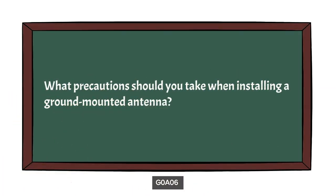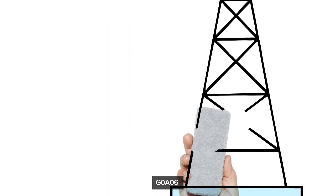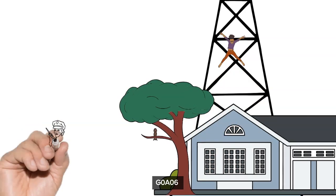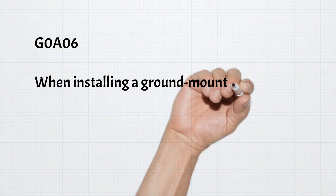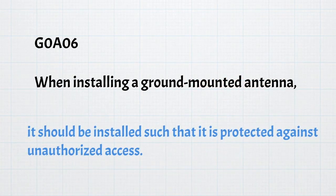Another safety question we should ask is: what precautions should we take when installing a ground-mounted antenna? Just like one would put a fence around a pool to keep neighborhood kids from sneaking in and drowning, we need to do something to protect our antennas so that kids don't climb on them. For the exam, we need to know that when installing a ground-mounted antenna, it should be installed such that it is protected against unauthorized access, particularly by small children.